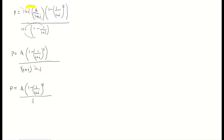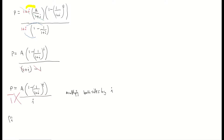All I'm going to do here now is multiply both sides by I — I want to eliminate this fraction. In other words, I'm cross-multiplying: put P over 1 and multiply both sides by I. So that becomes IP equals A times (1 minus 1 over (1 plus I) to the power of T). So we've got rid of part of our fraction.